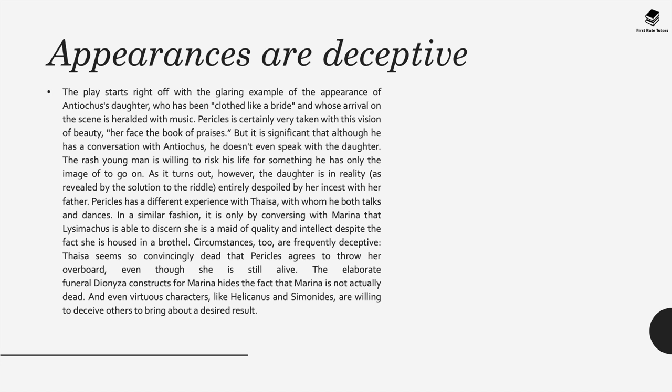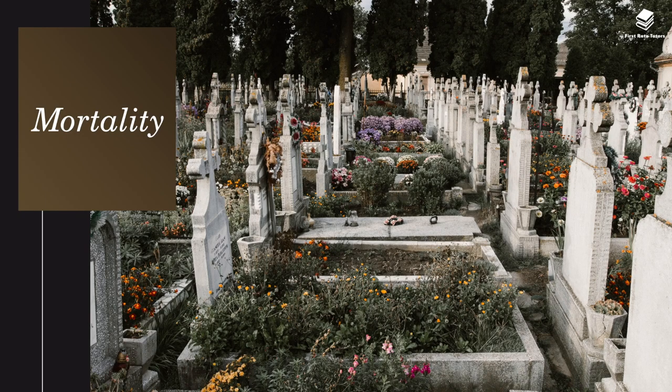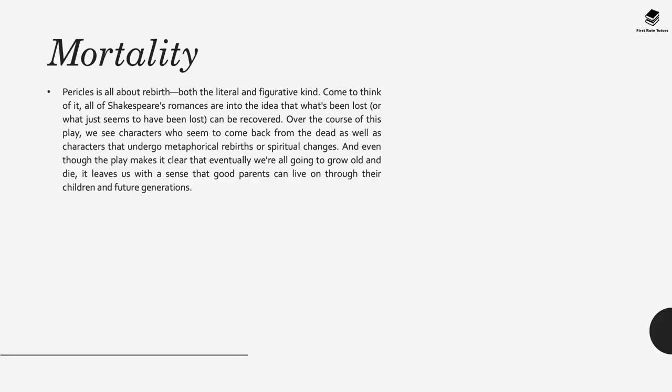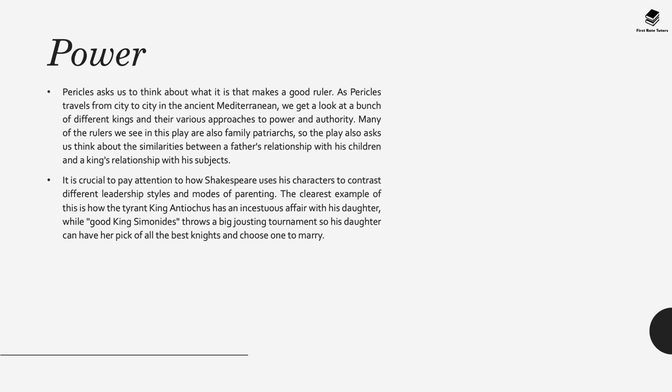Pericles has a different experience with Thaisa, with whom he both talks and dances. Similarly, it is only by conversing with Marina that Lysimachus is able to discern she is a maid of quality and intellect despite being housed in a brothel — her appearances go against reality. The theme of mortality is also important: Pericles is all about rebirth, both literal and figurative, as we see characters who seem to come back from the dead and characters who undergo metaphorical rebirths and spiritual changes. Finally, power is a key theme: as Pericles travels from city to city we get a look at several kings and their various approaches to power and authority. It is critical to pay attention to how Shakespeare uses these characters to contrast different leadership styles, with King Antiochus and his incestuous affair contrasted against King Simonides and his relationship with his daughter.